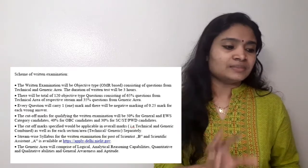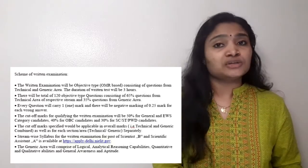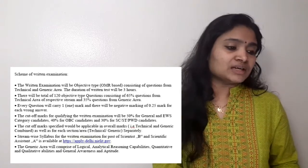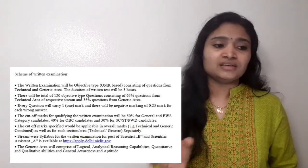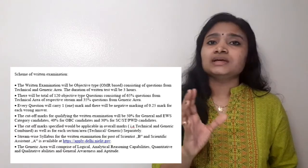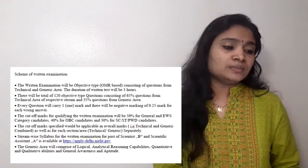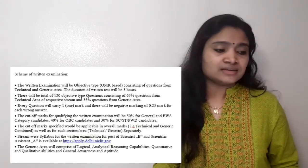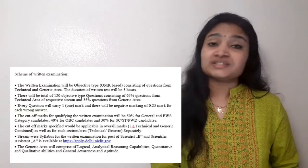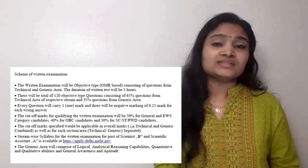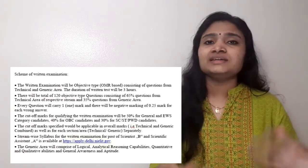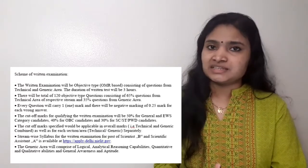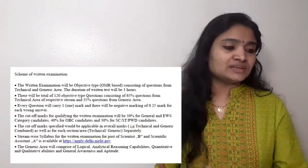They have also mentioned the cutoff percentage required for clearing this examination. The cutoff mark is 50% for General and Economically Weaker Section categories. If you belong to OBC, you require 40%. For SC/ST and Persons with Disabilities, the cutoff is 30%. All these details are given in the notification. The detailed syllabus is available as a PDF on the site, and the link will be shared in the description.